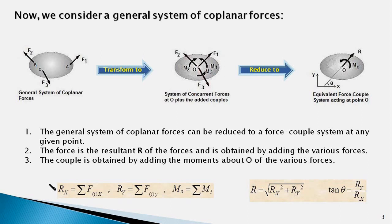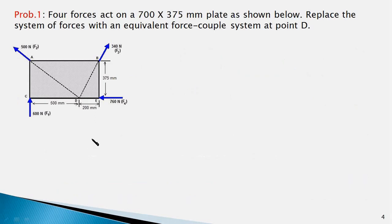Now that we have covered the theoretical aspects, let us use these concepts and solve a typical problem. The plate in this problem is acted upon by four forces, and you can easily figure out that they form a system of coplanar non-concurrent forces, because all the forces lie in a single plane. While the action lines of forces F2, F3 and F4 meet at a common point D, the action line of force F1 does not pass through D. So this system of forces can be replaced with a force-couple system at any point, and in this problem we are required to find an equivalent force-couple system at point D.